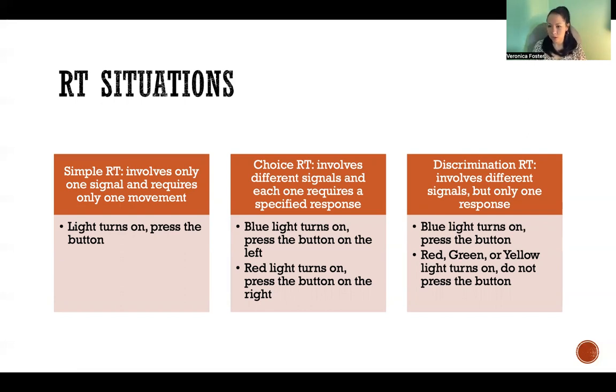And then finally, discrimination reaction time is when there are different signals, but only one response. So that could be like there are a bunch of different signals, but you ignore all of them except for this important one, and that's what triggers the response. So like in that example, blue light turns on, press the button, red, green, or yellow lights turn on, don't press the button. So you're having to wait and determine which color is the light and does that color initiate a response, and then you generate that response.